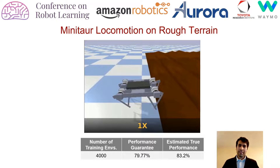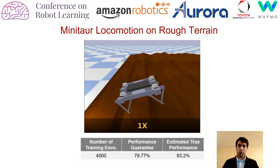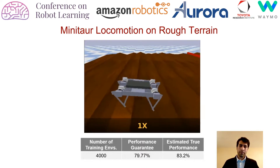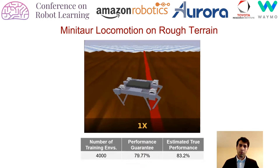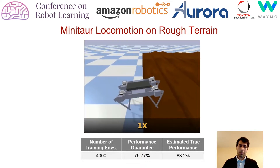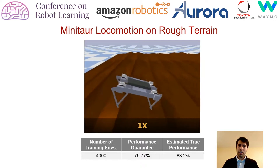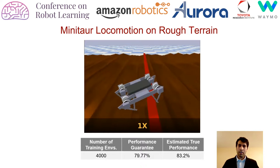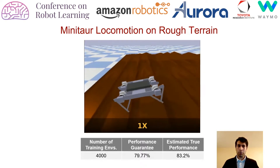In this example, the quadrotor robot Minotaur must traverse this rough terrain to reach the goal line, which is shown in red. Our PAC-based generalization guarantees ensure that the robot will be able to traverse 78-79% of the rough terrain before it either falls down or the time horizon runs out. The estimated test performance is about 83.2%.